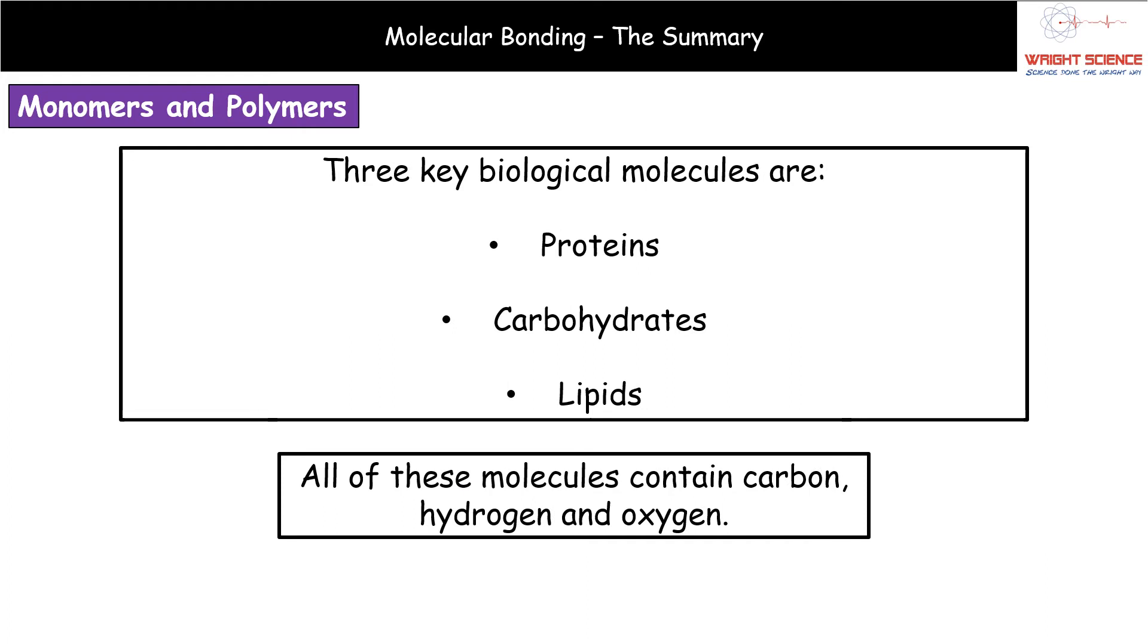Now, as far as our biological molecules topic goes in the A-level biology course, then we're going to focus on three key biological molecules to start with. Our three key biological molecules are proteins, carbohydrates, and lipids. All three of which should already be familiar to you. In terms of one feature that all three of those biological molecules have in common is the actual composition. What all of those have in common is that they all contain carbon, hydrogen, and oxygen. That's not to say that's all they contain, but proteins, carbohydrates, and lipids all contain carbon, hydrogen, and oxygen.